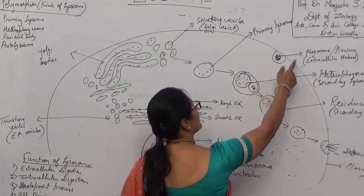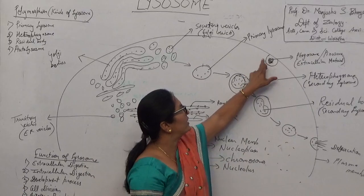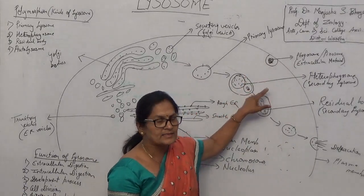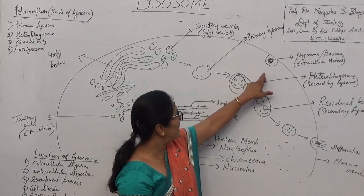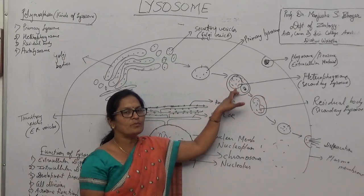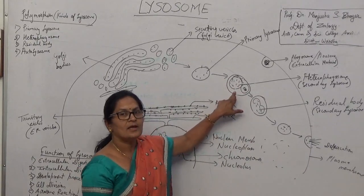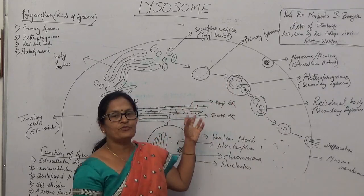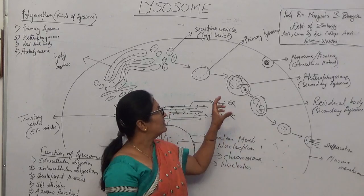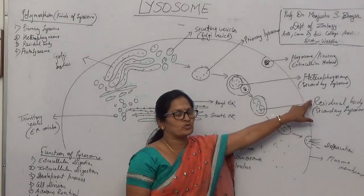This phagosome or pinosome comes from outside the plasma membrane. Basically, along with the food, it enters from the plasma membrane into the inside of the cell. This food particle combines with the primary Lysosome. The primary Lysosome mixes the hydrolytic enzyme and digests the food particle. When digestion is completed, the structure which is formed is called as heterophagosome or secondary Lysosome.